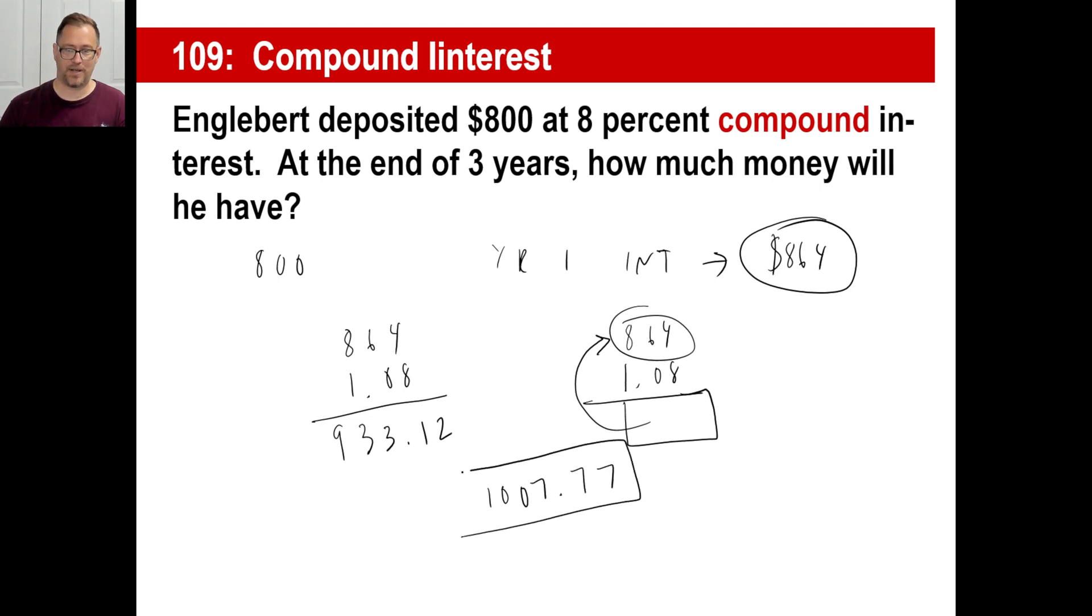933.12 times 1.08 is 1,007.7696. Okay. That's how much money Engelbert has after three years of 8% interest. Okay. It's compounding, not just on his 800, but the bank is going, oh, well at the end of one year, he has that much money.